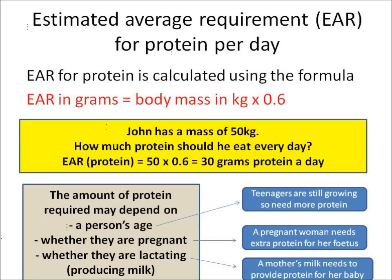So how much protein do you need per day on average? We can calculate that by taking somebody's mass in kilograms and multiplying it by 0.6. So John has a mass of 50 kilograms — we do 50 times 0.6 — and that tells us that John needs 30 grams of protein a day.